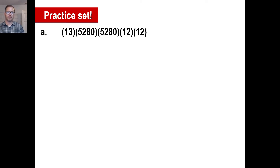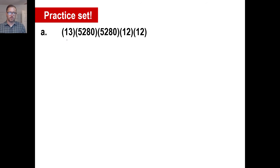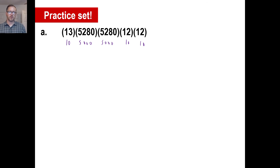Let's take a look at the practice set and do A first, then pause it and we'll do A together. I'm thinking 10, 5,000, 5,000, 10, and 10. And every single one of these is rounded down. So in real life, our actual answer would be way less than the actual answer — no probably about it, it will be way less because we're going down each time.